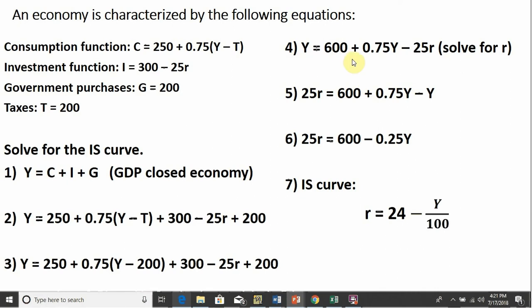So in step four, I did a little bit of simplification. I took this 0.75 and multiplied it through by what's in parentheses. So that's where the 0.75Y is coming from. And then I took 0.75 and multiplied it by minus 200. That will be minus 150. And then adding up all these other constant terms, we have 600 on the right-hand side.